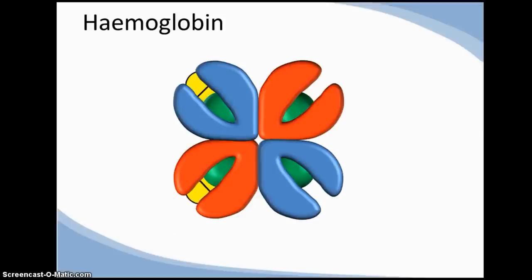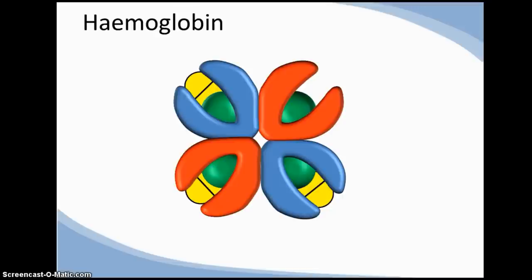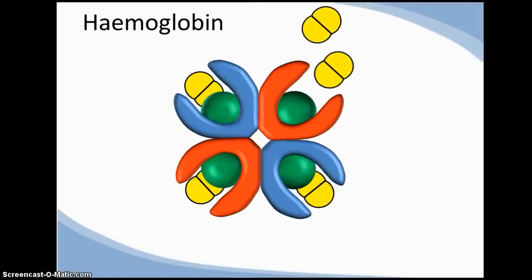Moreover, when this second oxygen binds, the structure changes again, creating a greater affinity for a third oxygen to bind. At 75% saturation, haemoglobin has a great affinity for the fourth oxygen molecule, about 300 times greater than for the first.